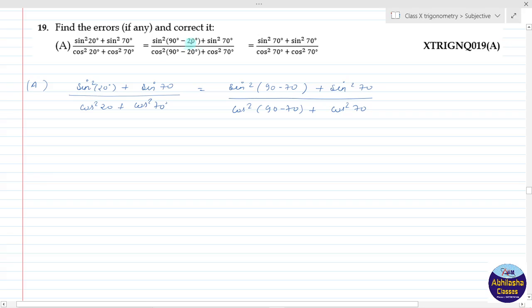So, this is incorrect. Here, instead of 20 it should be 70. Now, in the next step, what they have done is they have written sin of 90 minus theta as sin theta. No, this is wrong.